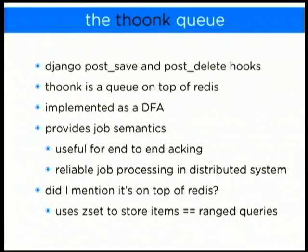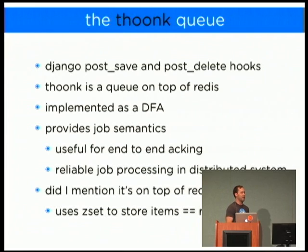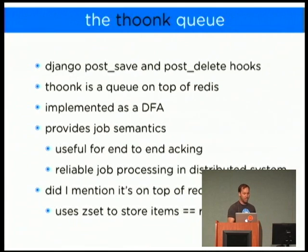Thunk is a queue on top of Redis. I didn't really choose it — it chose me because I was already using Redis pub/sub and didn't have time to spin up a high-availability RabbitMQ cluster. It's implemented as a state machine, so you can really see what jobs are claimed and what aren't. When my code crashes — the most likely part to fail — it's super easy to resume or clean up. Because it's on Redis using z-sets to store information, you can do range queries over your queue. This was great when implementing end-to-end acking, guaranteeing every message was published.